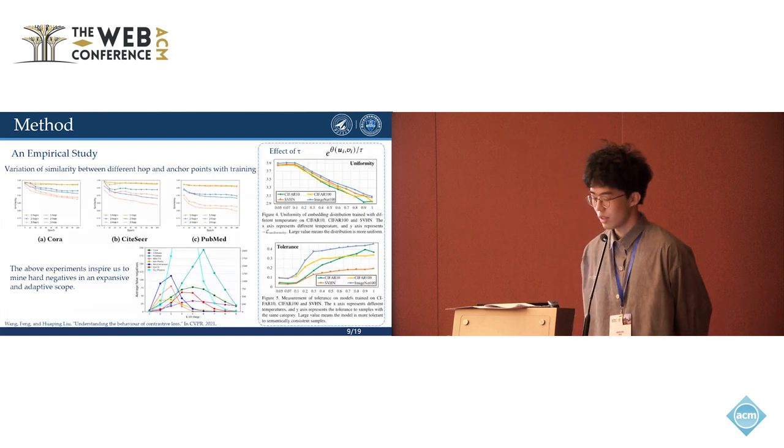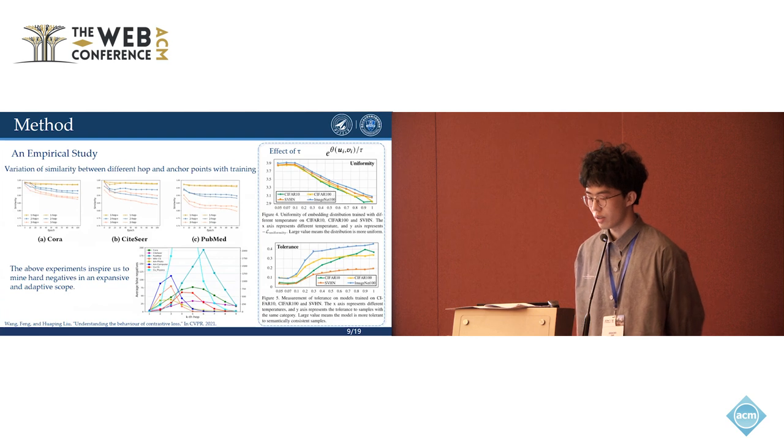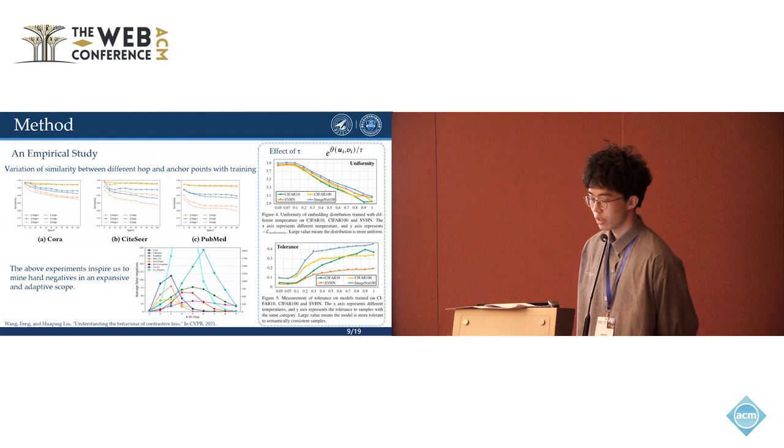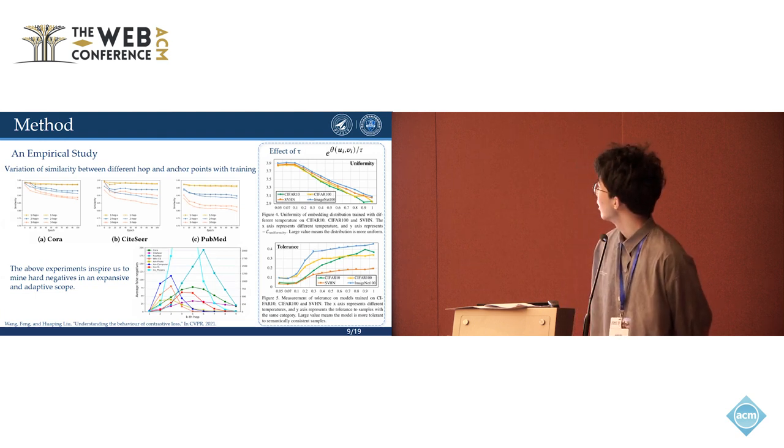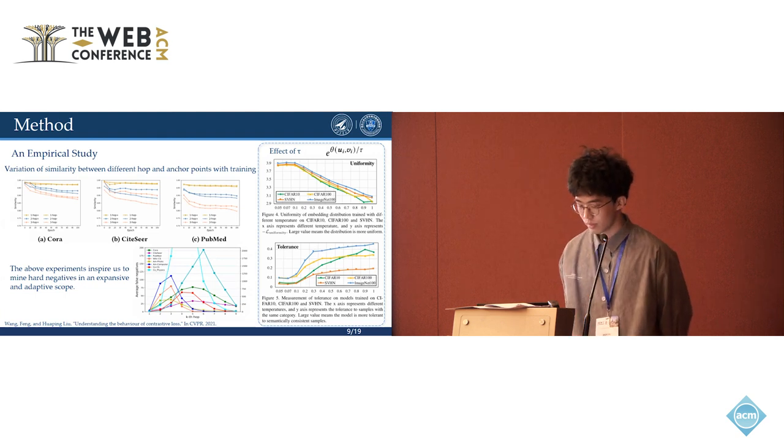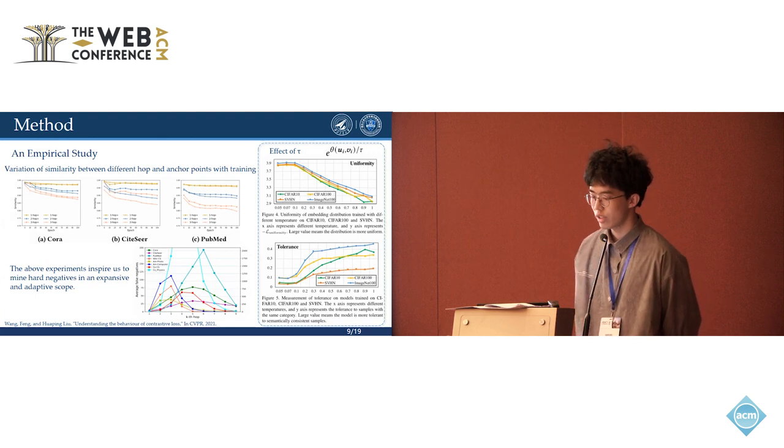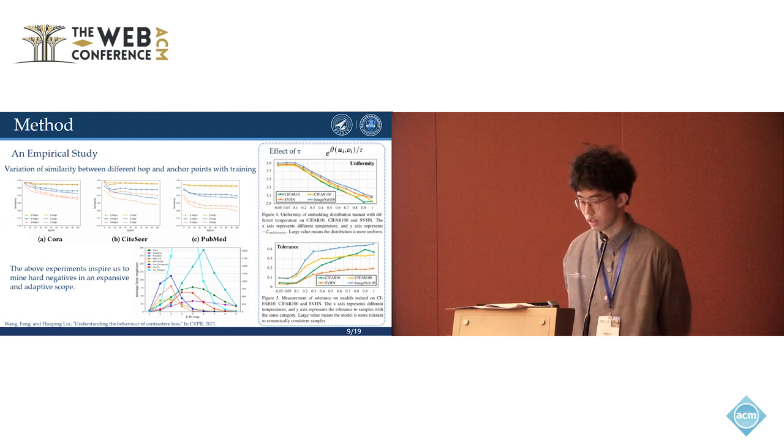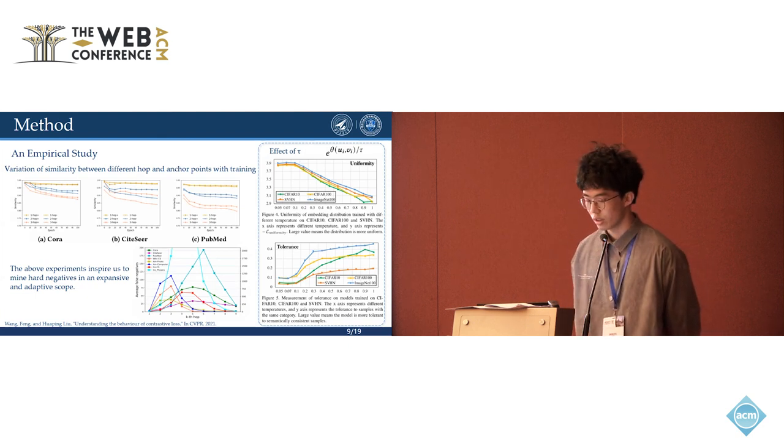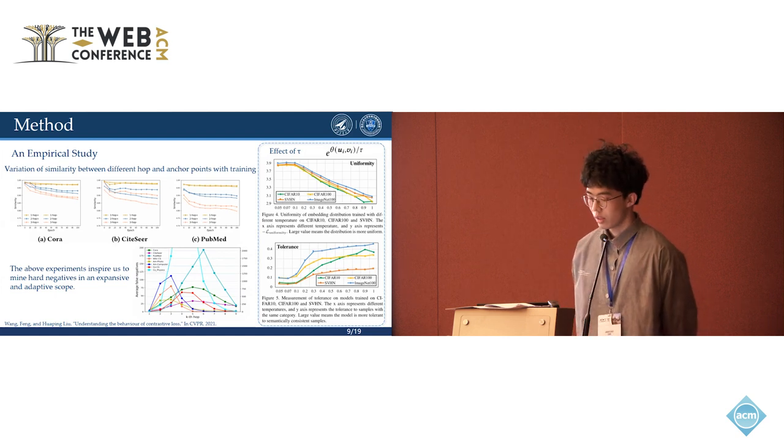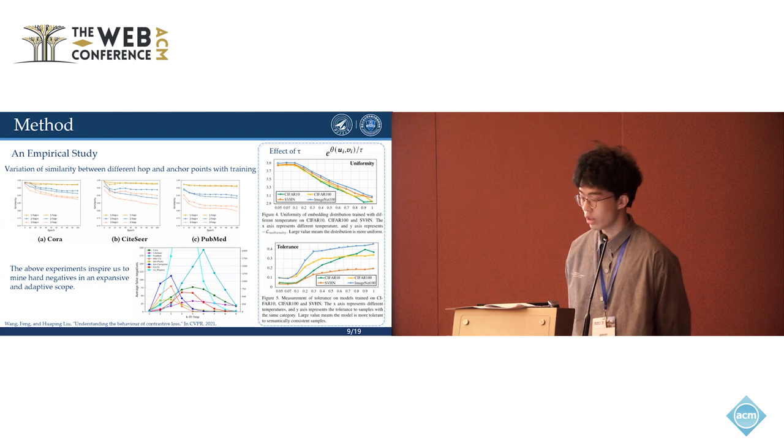Besides, the variation of similarity between different hops and its anchor points shows the close neighbors of our anchor are difficult to be pushed away, as shown in the figure. As you can see, when we point the parameter lambda to strengthen the pulse, when we small this lambda and the push is strengthened, and we strengthen the push, the near neighbors were not pushed away.